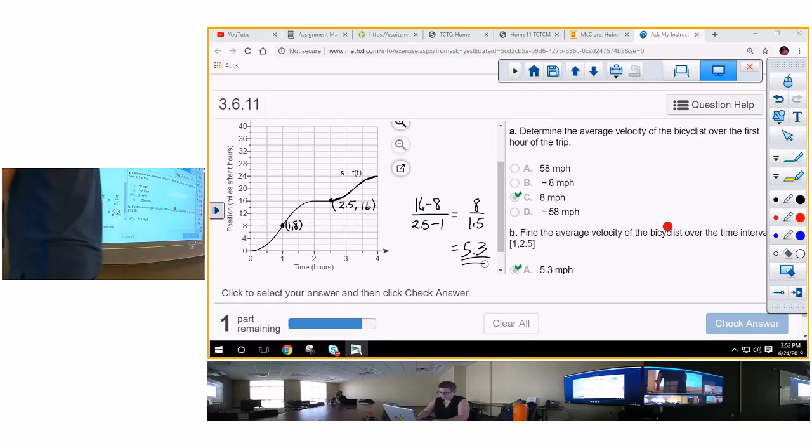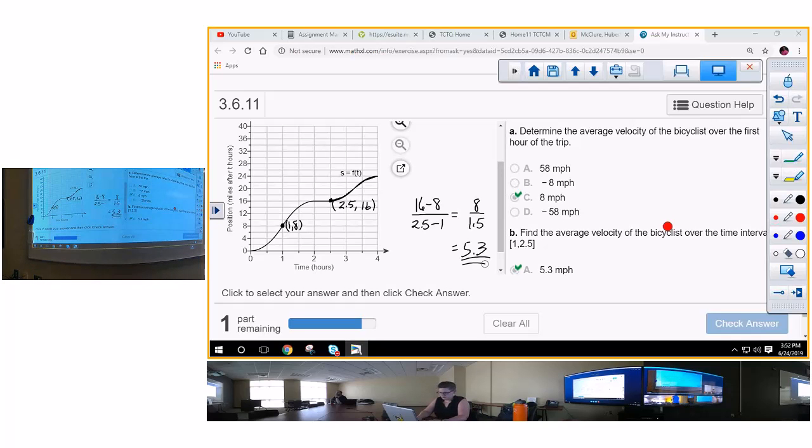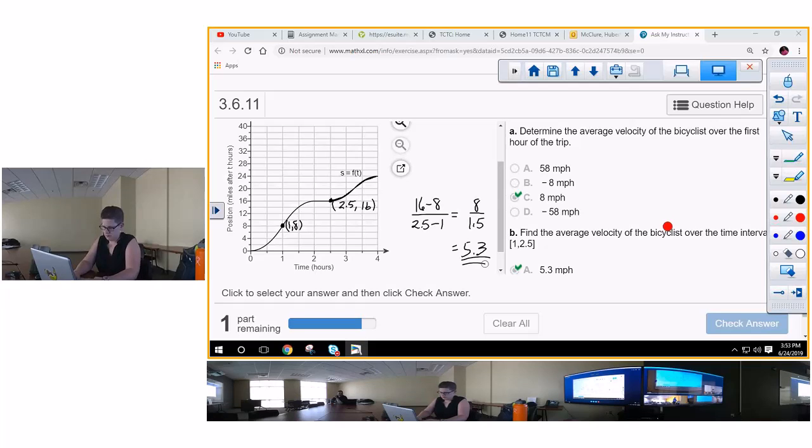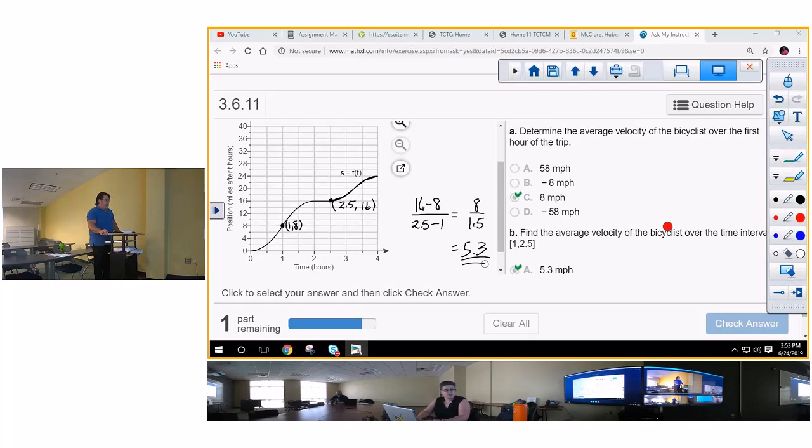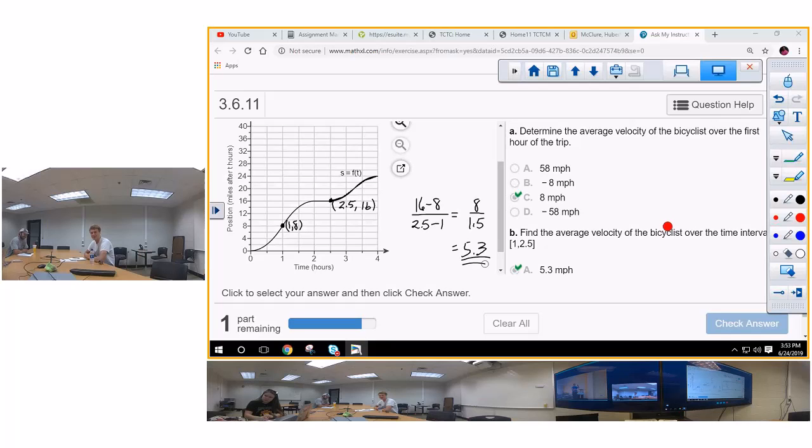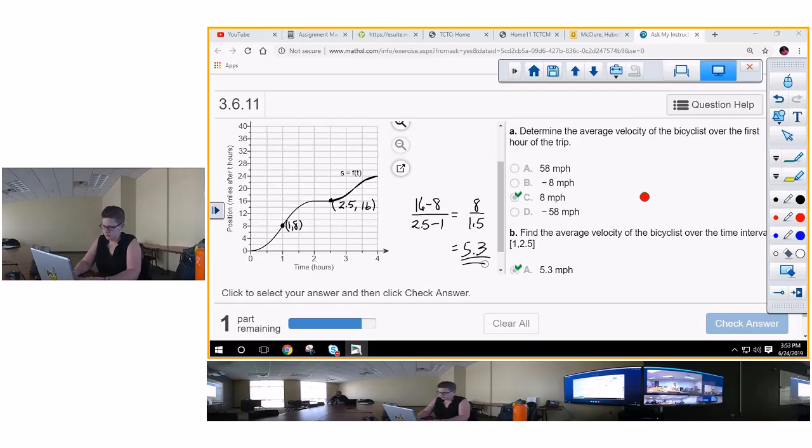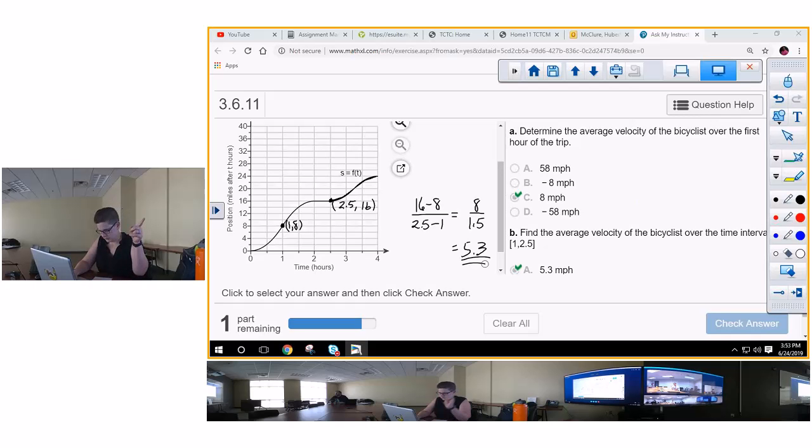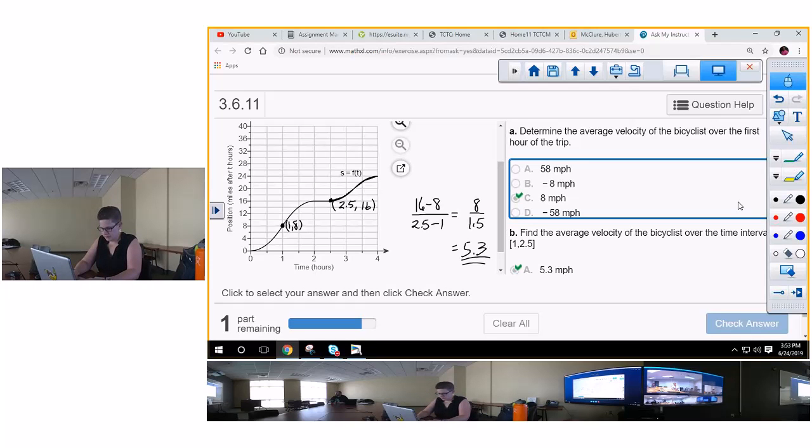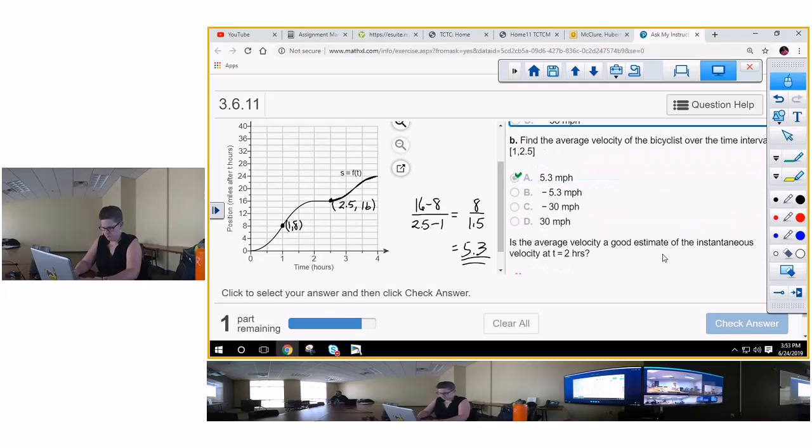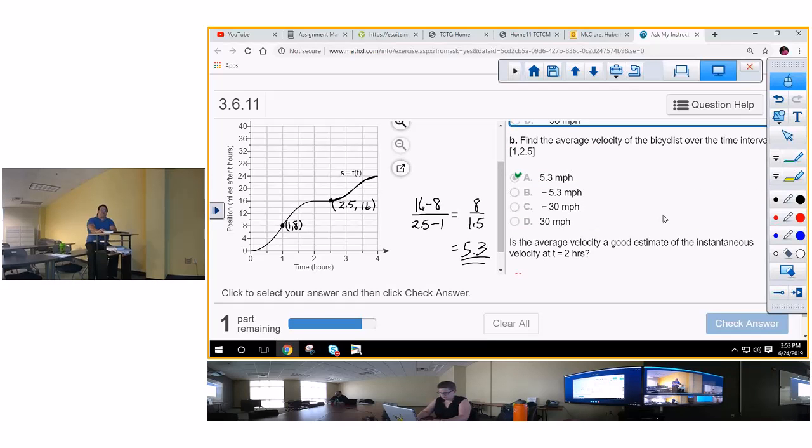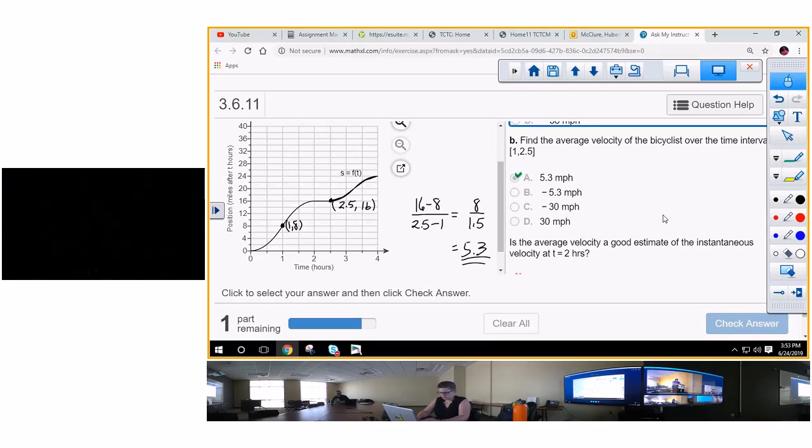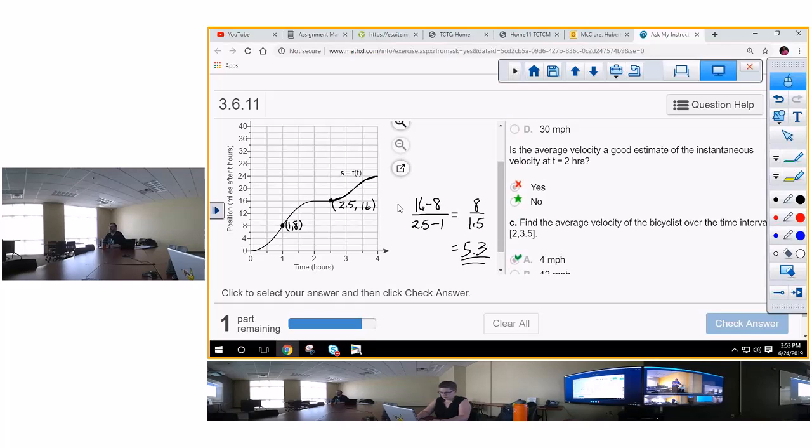Find the average velocity - I want you to do this one. Find the average velocity of the bicyclist over the time interval 1 to 2.5. So I'm going to take my red marker, put 1 at 1, and 2.5. So this is (1,8), and this is what? (2.5,16). 16 minus 8 over 2.5 minus 1. 16 minus 8 is 8 over 1.5, and what's 8 divided by 1.5?